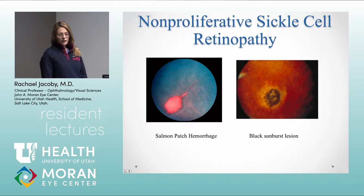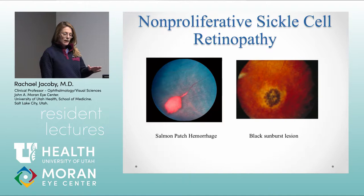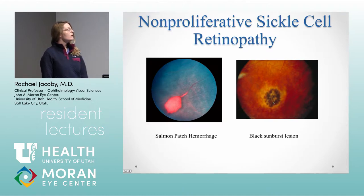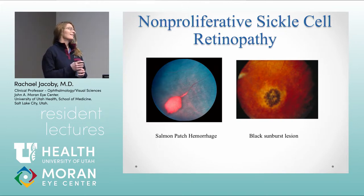In non-proliferative sickle cell disease, the classic findings include the salmon patch hemorrhage — an arterial occlusion with downstream intraretinal hemorrhage. That salmon patch hemorrhage can de-hemoglobinize and lead to refractile deposits visible in the retina. The sunburst lesion comes from subretinal hemorrhage followed by RPE migration. Angioid streaks can also be seen in sickle cell patients from occlusions at the choriocapillaris that lead to breaks in Bruch's membrane, occurring in about 6% of hemoglobin SS and SC patients.